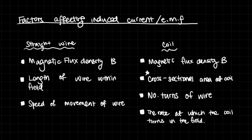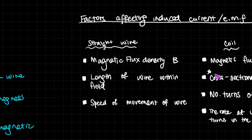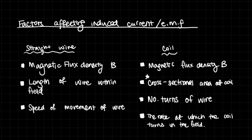There are factors affecting the induced current or the electromotive force — you need an EMF in order to have a current, so they're related. For straight wires, the factors are: first, the magnetic flux density — how strong is the magnetic field? Second, how long is the length of the wire within the field? And also how quickly you move the wire — the faster you move it, the higher the electromotive force. For a coil, the magnetic flux density B again matters, as does the cross-sectional area of the coil, the number of turns of the wire, and the rate at which the coil turns in the field — basically the speed.